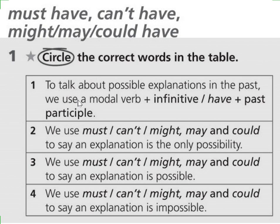This first exercise of the workbook on page 70 in ISOCAN 4 group is giving us details about what to use when. Let's focus on this part. Regarding the first part, to talk about possible explanations in the past — possible explanations should be underlined — we use a modal verb plus infinitive or have plus past participle. Right after a modal verb, infinitive can't be followed, so the answer should be have plus past participle.